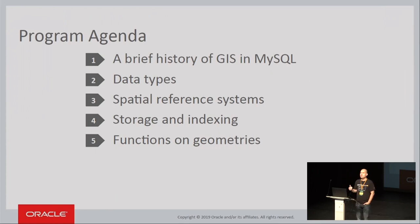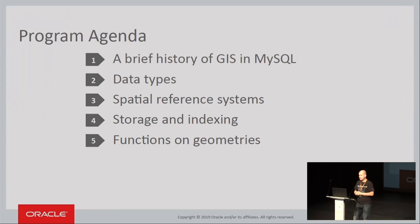I'm going to go through all the stuff we need in order to support any type of data in a database system. You almost need data types, a way to store those data types, and if you want any type of performance, you need indexing. In order to have some fun with it, you need functions — numbers wouldn't be fun without addition and multiplication. Same with geometries; you have to be able to manipulate them. And in particular for spatial data, you need spatial reference systems, some kind of metadata — the same thing as character sets and collations for text strings.